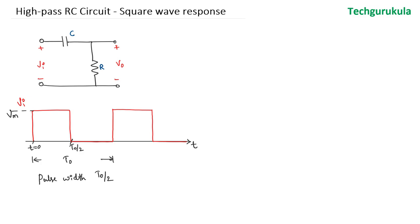Looking at the input right at T equal to 0, suddenly a voltage of Vm is applied across the circuit. We know the capacitor cannot allow instantaneous changes of voltage across it, which means immediately at T equal to 0, the voltage across the capacitor will be 0, which means the voltage across the resistor will be equal to Vm. Hence, the output voltage at T equal to 0 will be Vm.